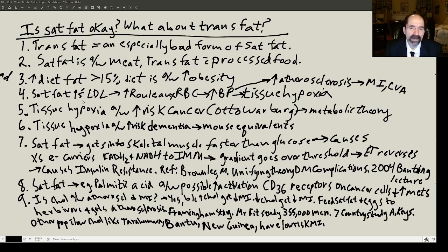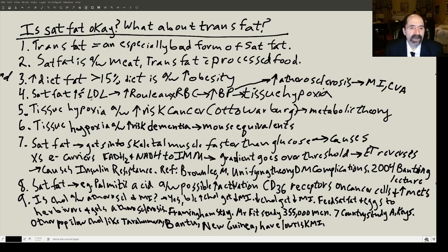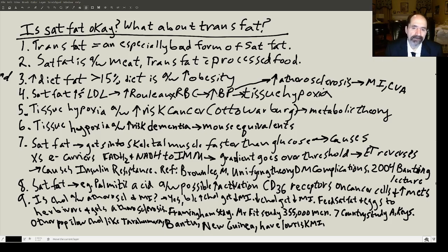Whenever a person starts eating more than 15% fat, they're increasing the likelihood of becoming obese. The more fat you eat, the more likely you are to become fat yourself. Saturated fat increases LDL cholesterol. LDL cholesterol is a bridging molecule — I have pictures of this in the lecture on atherosclerosis. It'll cause rouleau formation — stacking of red blood cells — making blood thick and increasing blood pressure. Increased atherosclerosis increases the risk of myocardial infarction and cerebrovascular accident.